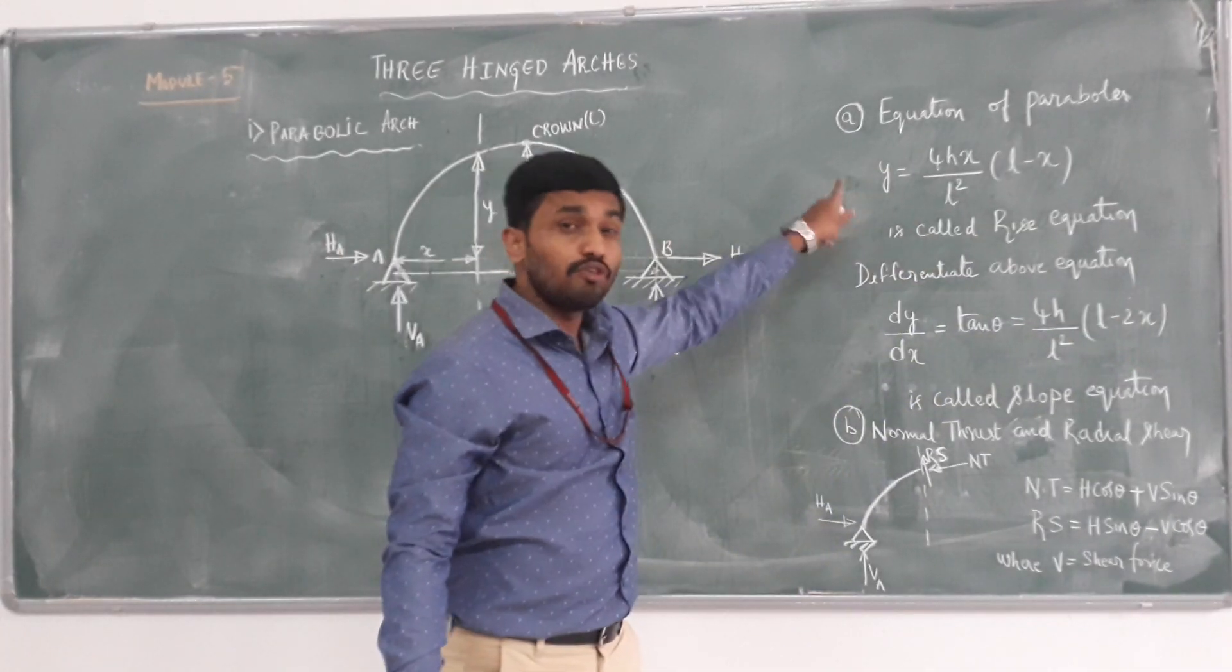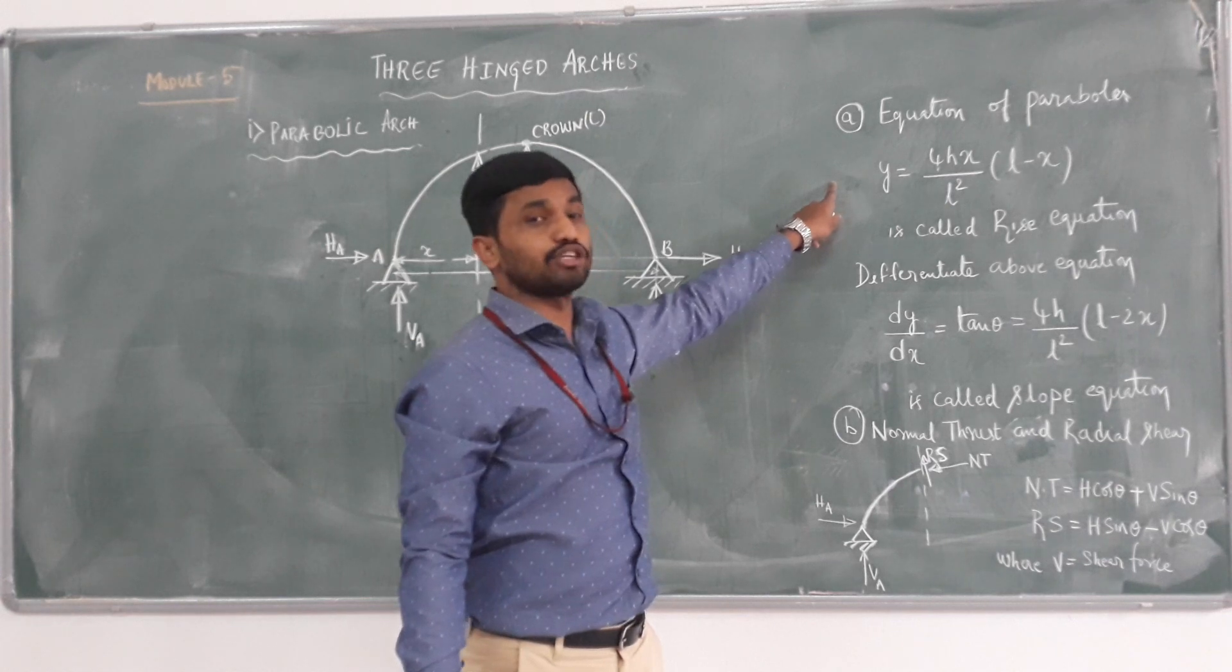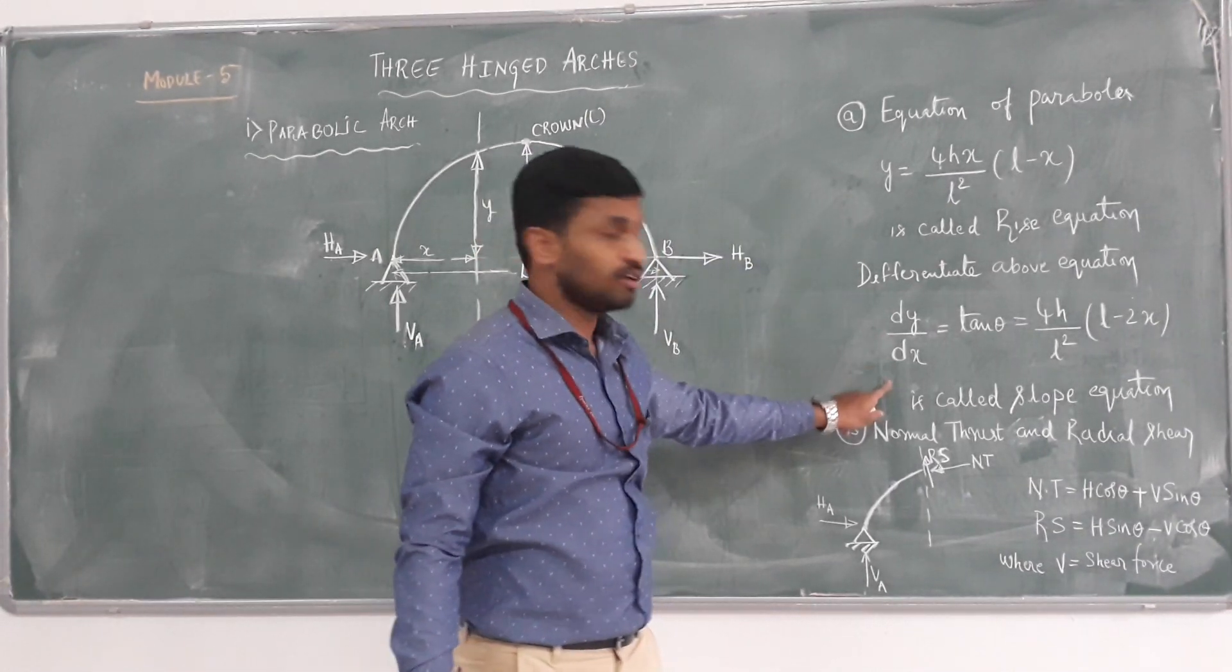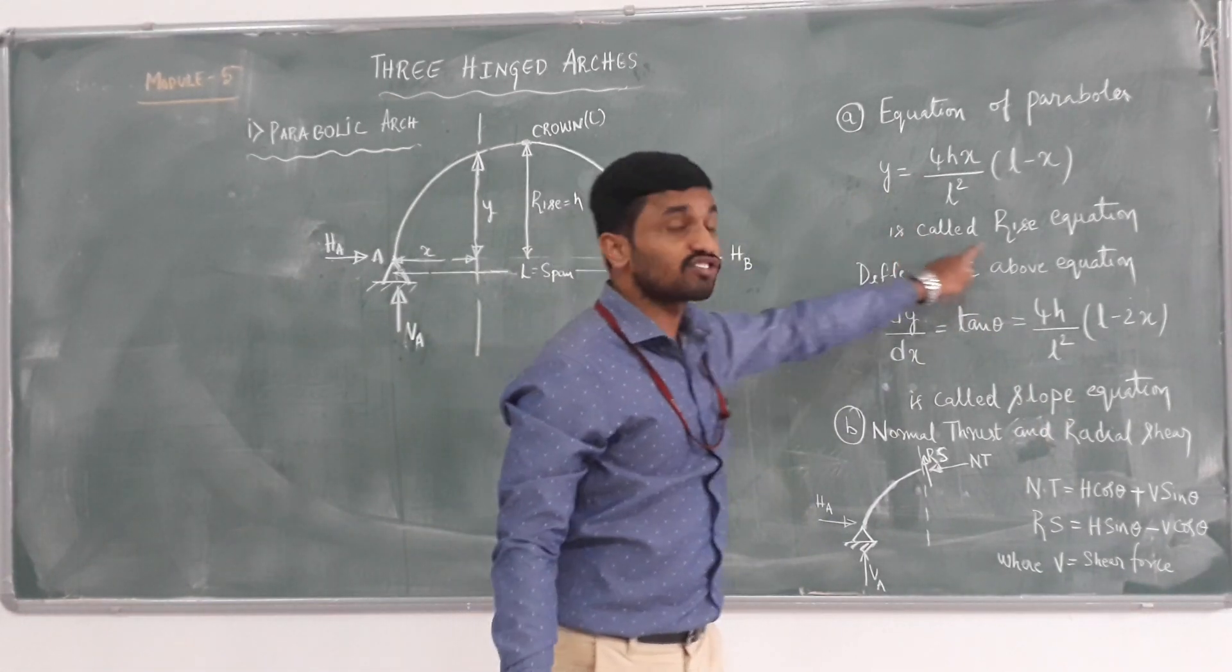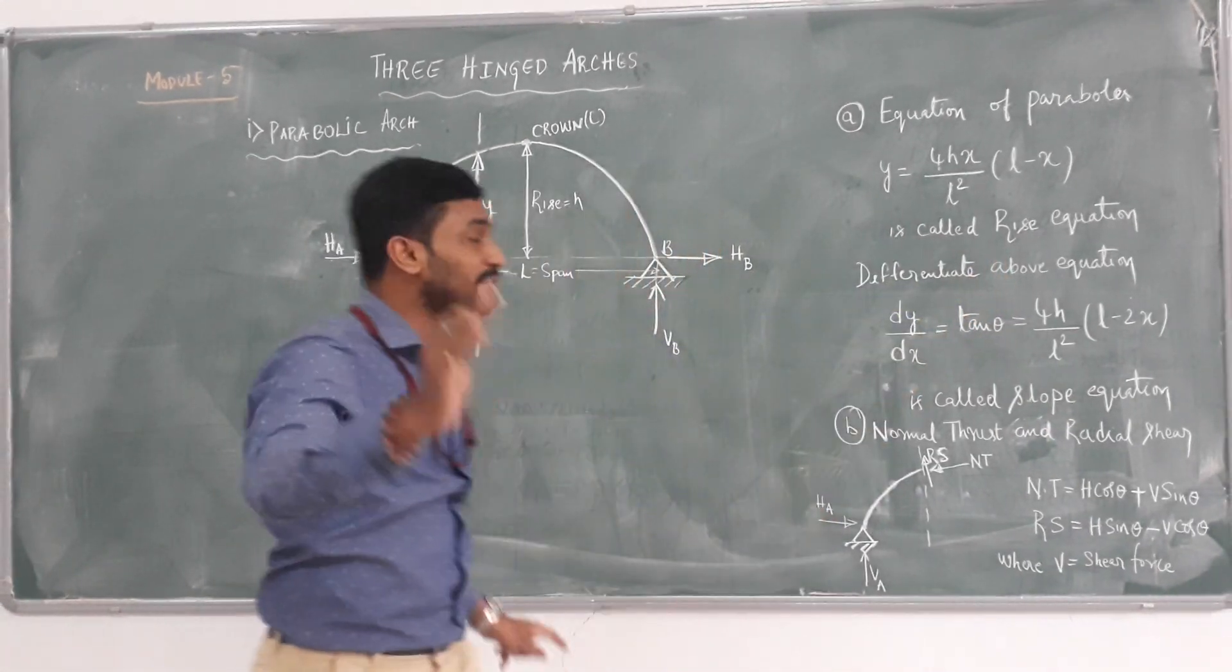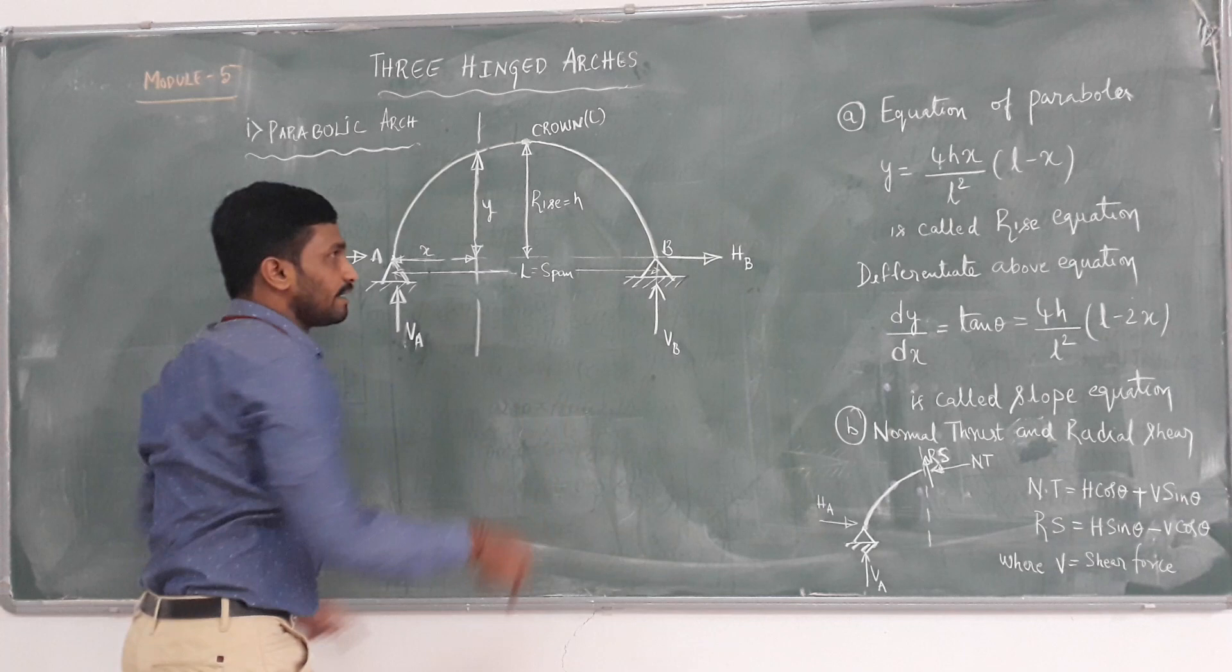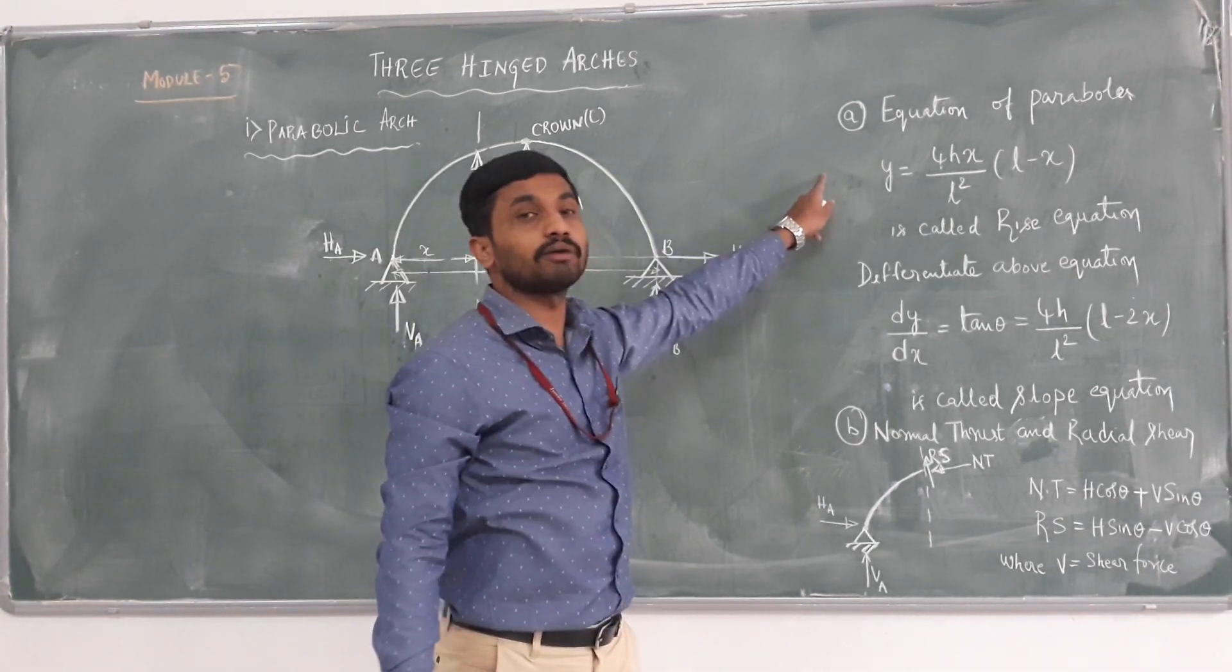Please remember this equation. If you differentiate this parabolic equation, we are getting slope equation. This equation is called slope equation. Y equation is called rise equation at any section of parabola. This is the equation you have to remember.